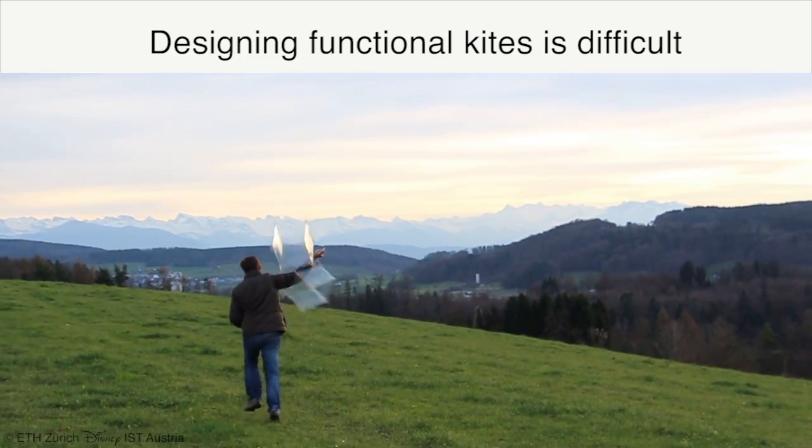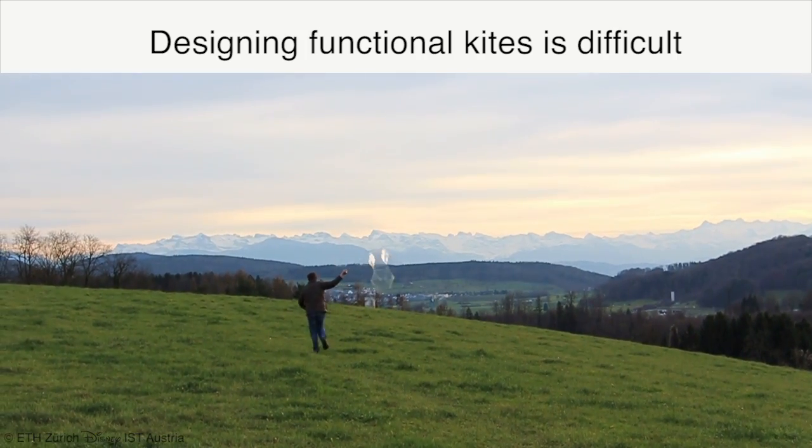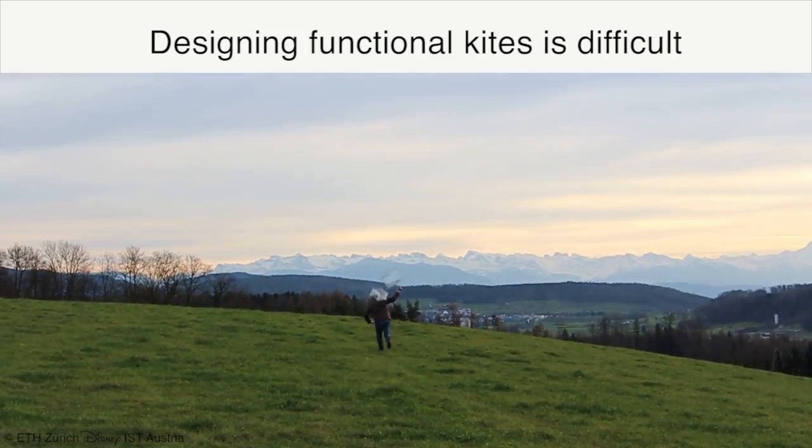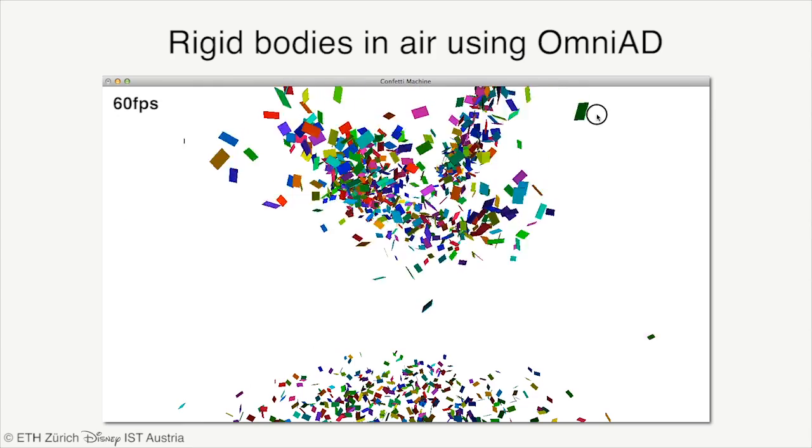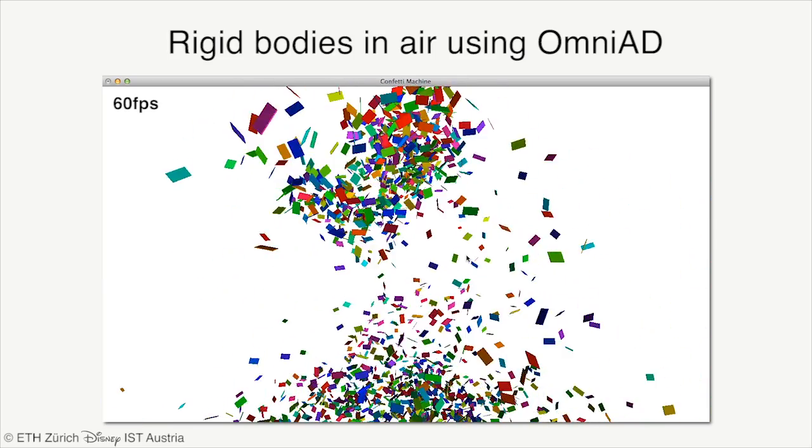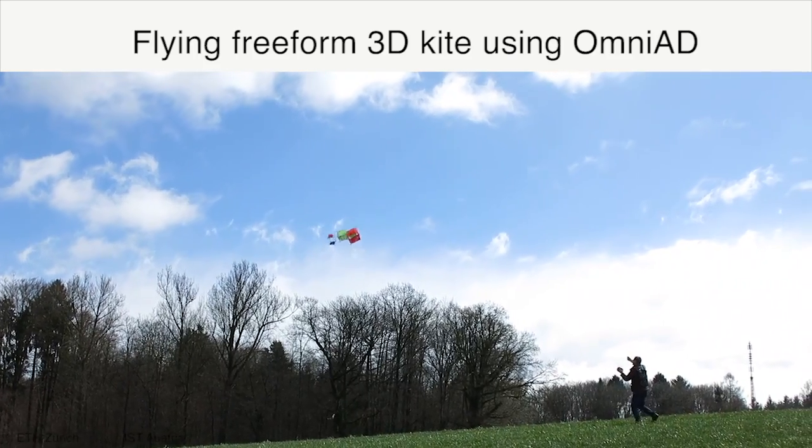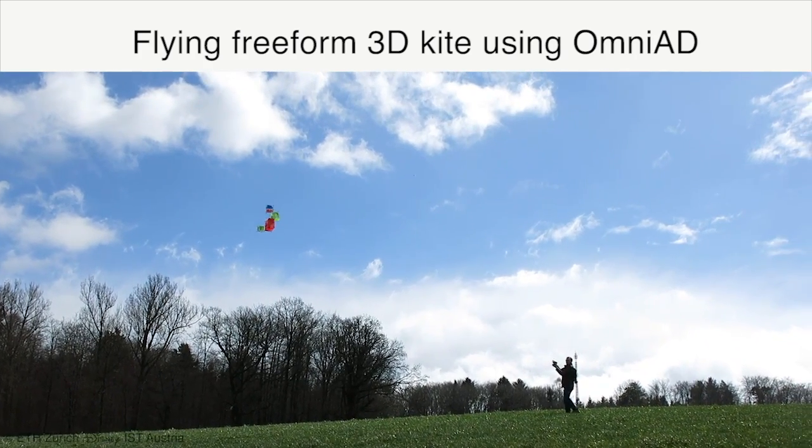Constructing an aerodynamically functional object such as a kite is even more difficult as it requires an in-depth understanding of aerodynamic forces. We present Omni-AD, which enables real-time simulation of rigid bodies interacting with air. Omni-AD allows the user to construct free-form 3D kites that are aerodynamically functional.